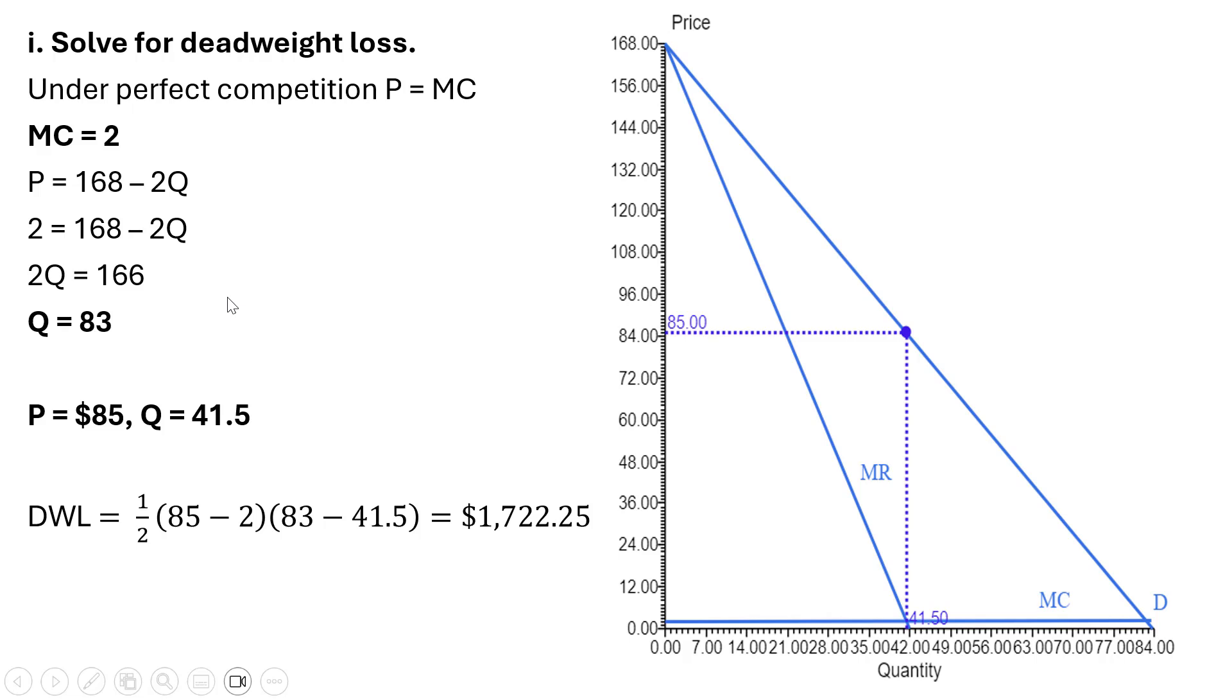And lastly, let's do the deadweight loss. First, we need to figure out what's going on under perfect competition. If this happened to be a perfectly competitive market, price would equal marginal cost. We know that marginal cost is 2. So here's our price equation. Where we have P, we're going to replace that with 2, since price equals marginal cost. And now we're going to solve this for Q. And we get 83. So under perfect competition, the price is $2, which equals marginal cost, and 83 units would be bought and sold. That's going to be this intersection down here.